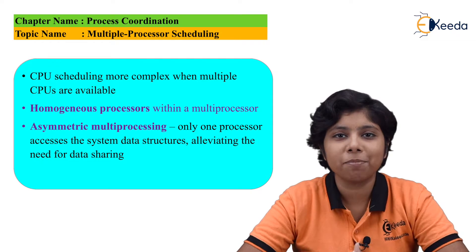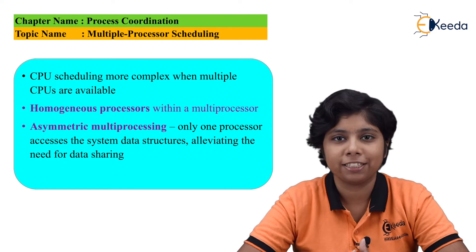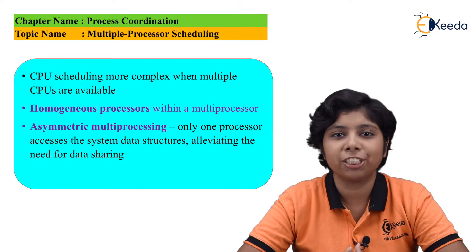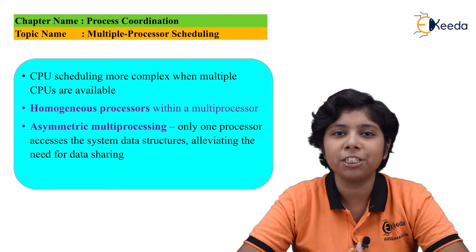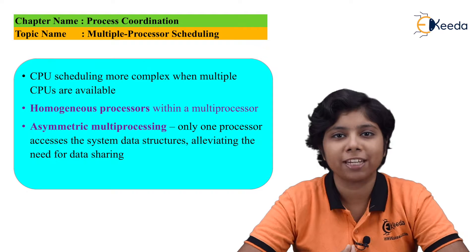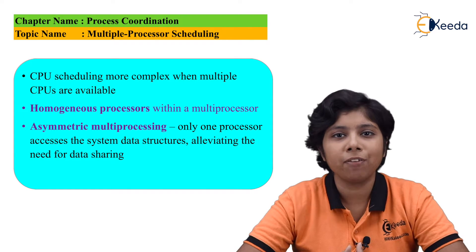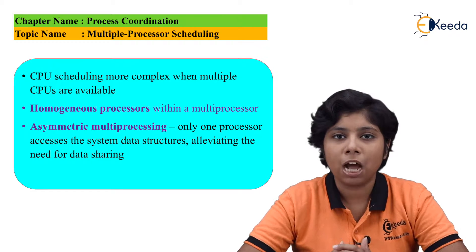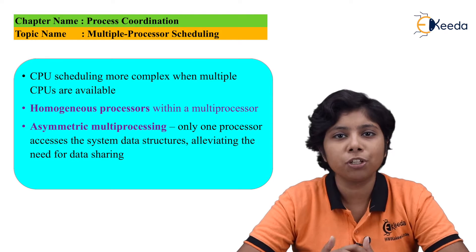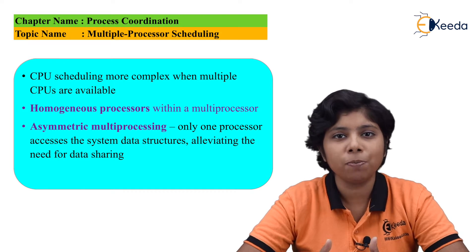We are concentrating on the systems which have identical and homogeneous processors in terms of their functionality. But even with homogeneous systems, there are some limitations while we are doing the CPU scheduling. For example, take an I/O device which is attached to a private bus of any processor. A process that wants to use that processor's I/O device bus wants to be scheduled on that processor only.